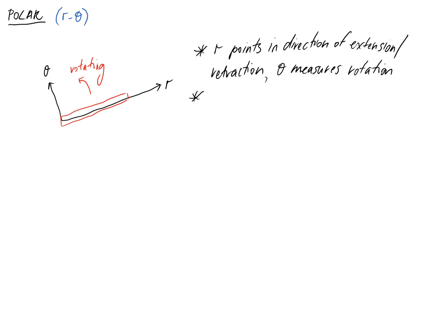Again we have unit vectors associated with this coordinate system. We have er which is in the r direction. And we have eθ which is in the theta direction.